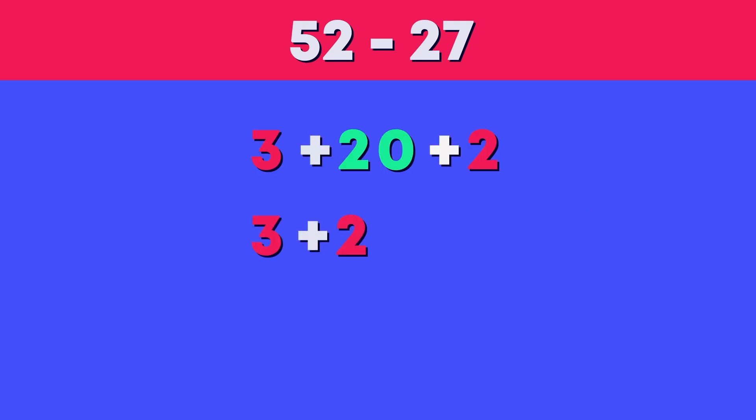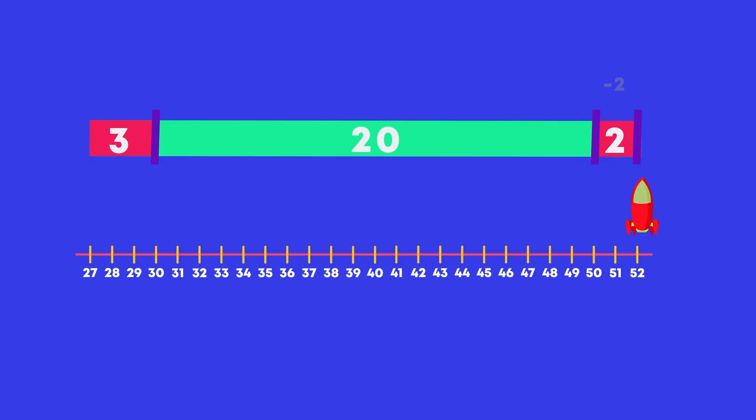The number we jumped all together is our answer. Let's add them up: 3 plus 20 plus 2. 2 and 3 is 5, 5 plus 20 is 25. Great work! Did you know if you count the bridge backwards from the bigger number to the smaller number, you will get the same answer?